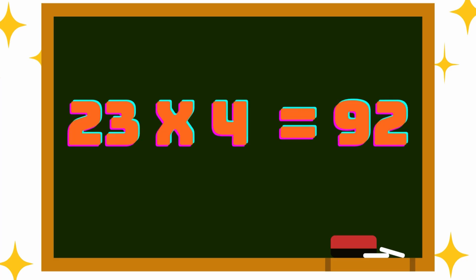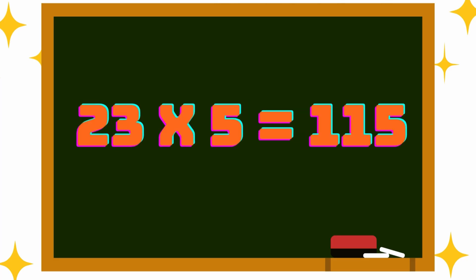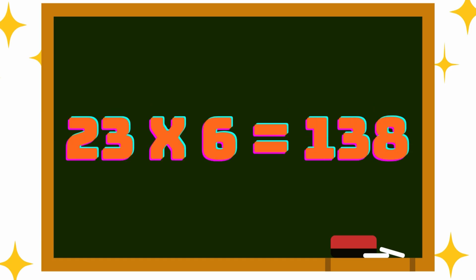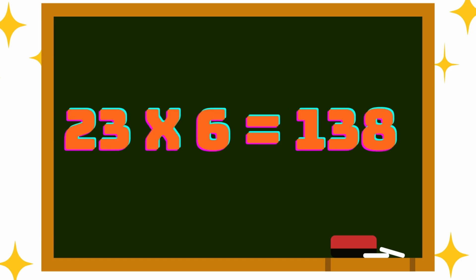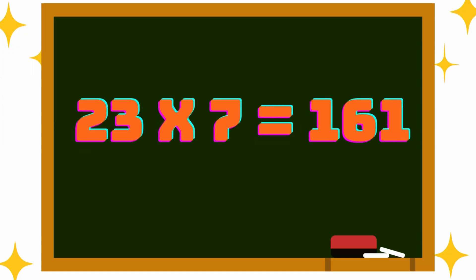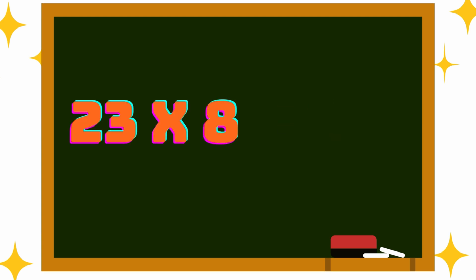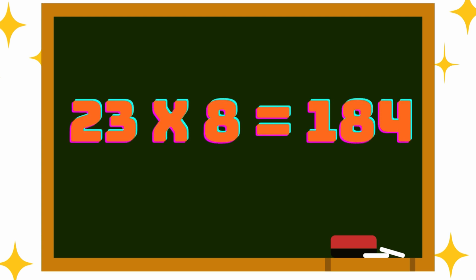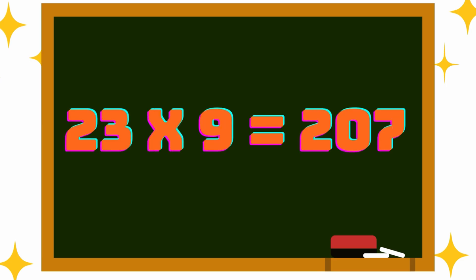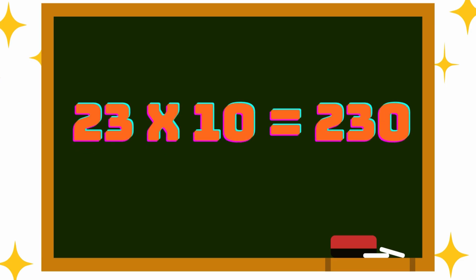23 into 5 is 115, 23 into 6 is 138, 23 into 7 is 161, 23 into 8 is 194, 23 into 9 is 207.